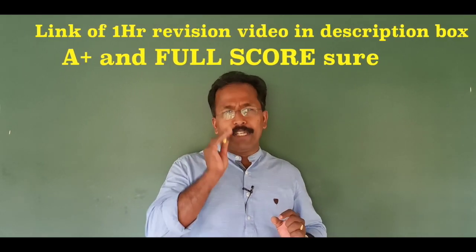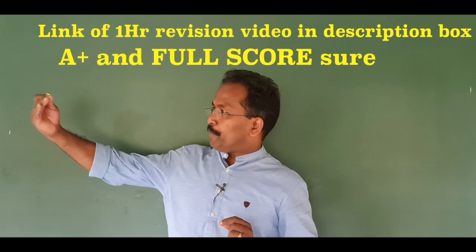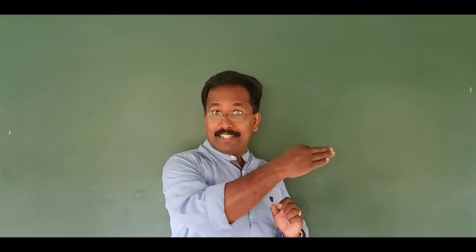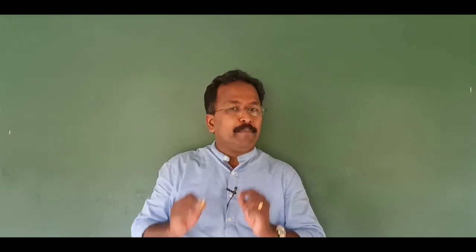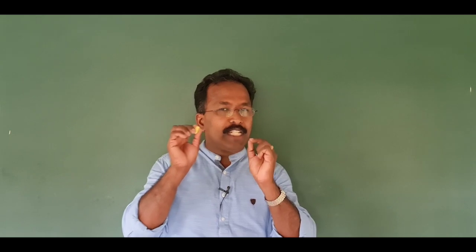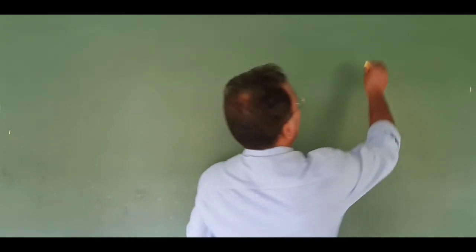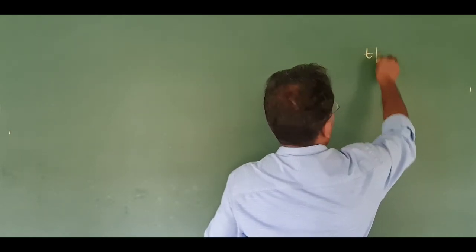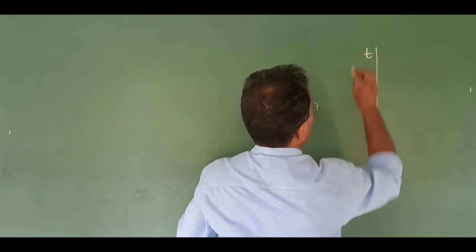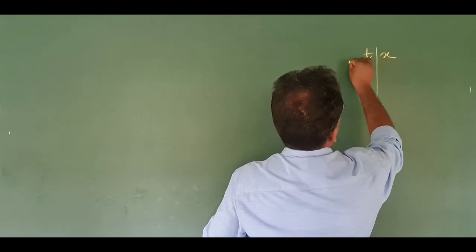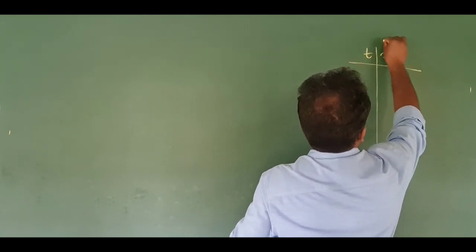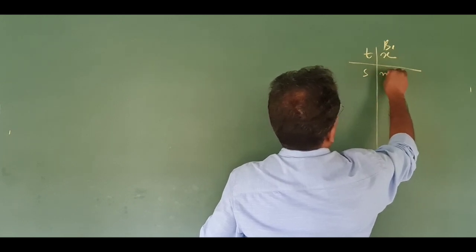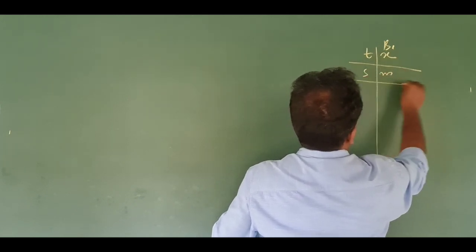We are going to take a look at the position-time graph — the X-T graph. We are going to look at the data: time in seconds on one axis, and position of Bird 1 in meters on the other.